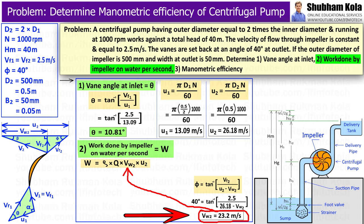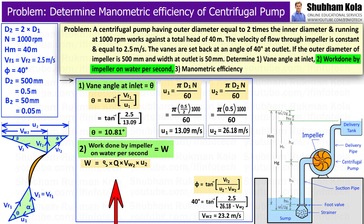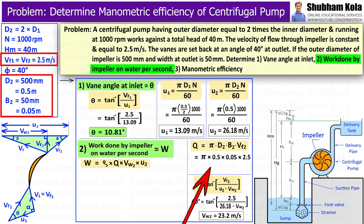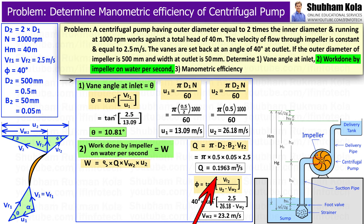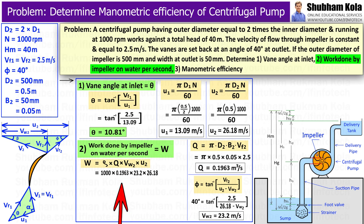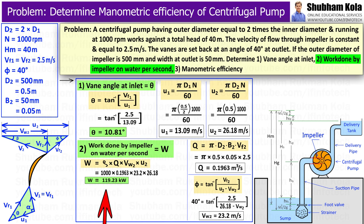Discharge Q is given by the formula π D2 b2 Vf2. Substituting all values, Q = 0.1963 m³/s. Substituting Vw2, U2, Q, and density ρ = 1000 kg/m³ into the work done formula, we get work done by the impeller on water per second equal to 119.23 kW.